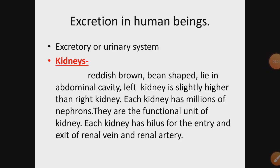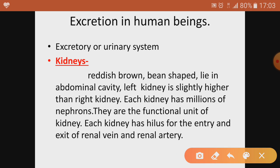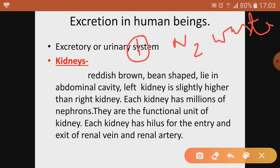Good morning students. As you know, we have discussed the human excretory system, which comprises kidneys, ureters, urinary bladder, and urethra. In the previous class I gave you a brief introduction of the human excretory system. As a recap, the importance of the excretory system is that it removes nitrogenous waste from the body. This nitrogenous waste is generated by the digestion of proteins.